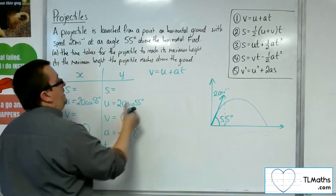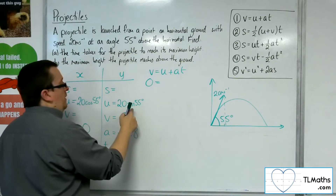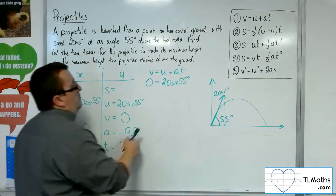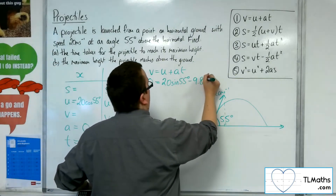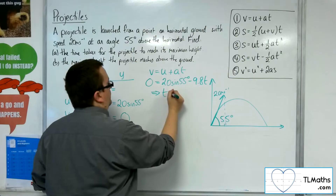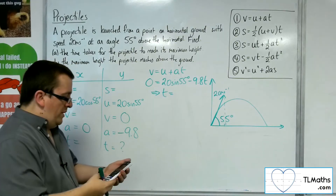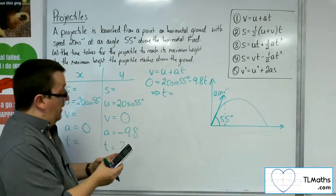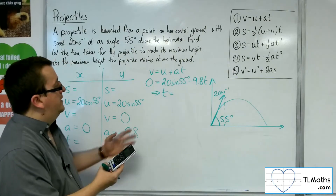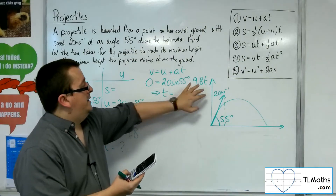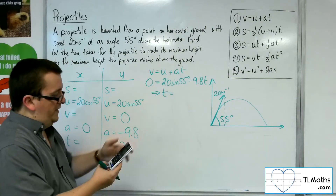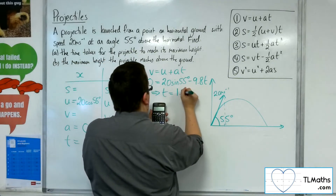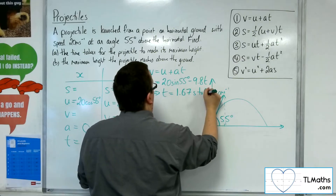So v equals u plus at. I want the final velocity to be 0, the initial velocity would be 20 sine 55, the acceleration is minus 9.8, and time is what I want. I rearrange to get time: 20 sine 55, which is 16.38, divided by 9.8. I get a time of 1.67 seconds to 3 significant figures.